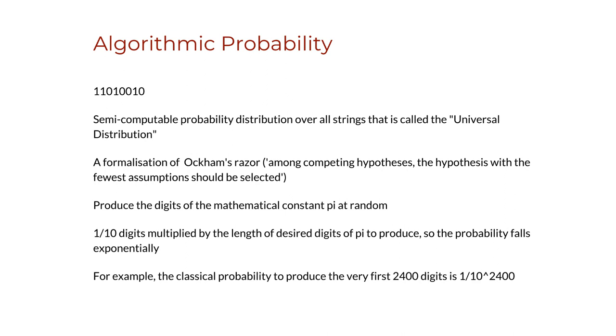So algorithmic probability induces a semi-computable probability distribution over all strings. This distribution is called the universal distribution.